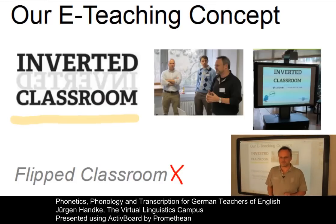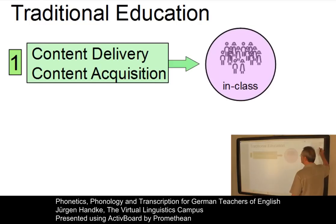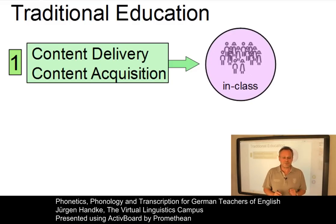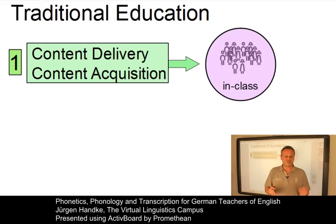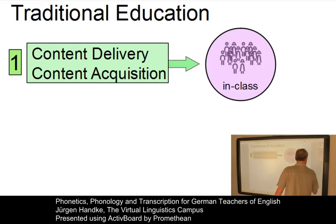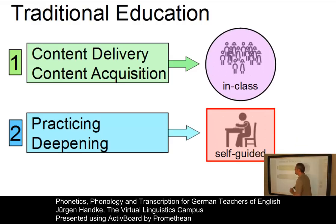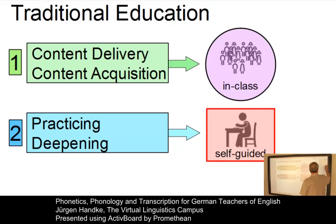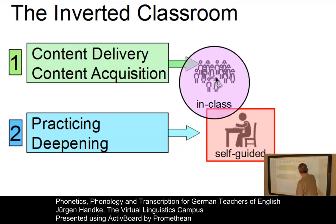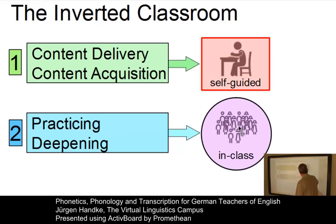How does this model work? In traditional teaching, content delivery and content acquisition are realized in class, where several dozens of students have to gather at the same time to be entertained by their teacher. In a second phase, students practice on their own on the basis of additional exercise material, homework tasks, and so on. Now we will flip or invert these two activities and apply the inverted classroom model. Content acquisition is now self-guided — it takes place first and is done online. The additional second phase, the in-class phase, is dedicated to practicing, rehearsing, discussion, analysis, etc.